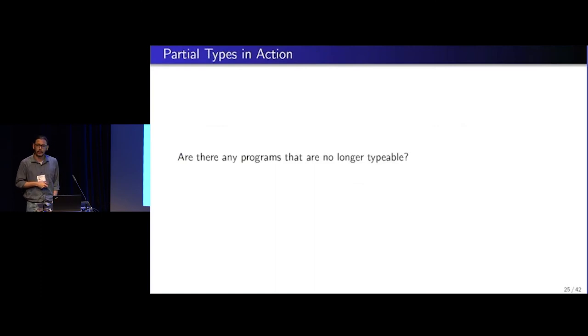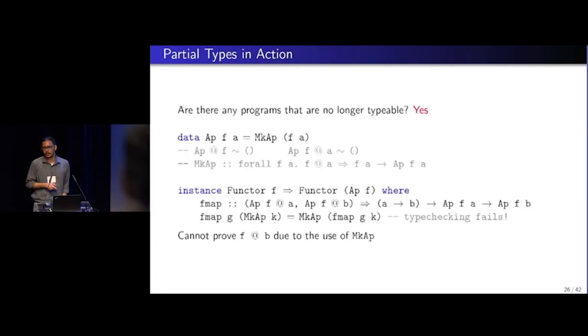So are there any programs that are no longer typeable? This is the start of an empirical study, right? Because just by having these rules, we are not sure if everything would work out. It so happens that there are. So consider this app f a type. You might recognize this from the GHC generics library. And with our elaboration procedure, we would elaborate the data type and generate two equations that say that app at f holds everywhere and app f at a holds everywhere as well.